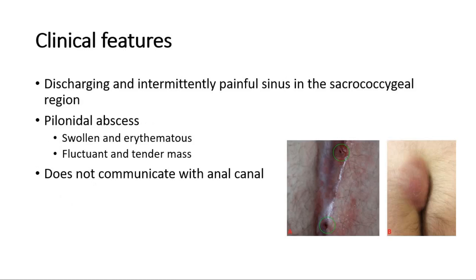Pilonidal sinus disease most commonly presents as a discharging and intermittently painful sinus in the sacrococcygeal region. As shown in picture A, a pilonidal abscess can form when a pilonidal sinus becomes infected, presenting as a swollen and erythematous region. On examination, there will be a fluctuant and tender mass. Picture B shows a pilonidal abscess.